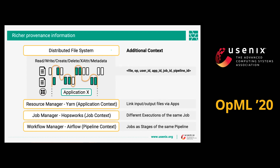At this point we have file, operation, user ID, and application ID, giving us at the very least a relation between input and output files. By adding job manager context — in our case HopsWorks — we can associate different applications that are actually runs of the same job. A job can be seen as a blueprint of an application; we can run it at multiple points in time and all of these would be executions of the same job. We can add even more context in the form of a workflow manager — in our case Airflow — which allows us to link together jobs that are part of the same stage, so that a particular stage's output becomes the next stage's input.